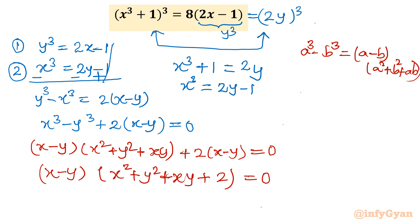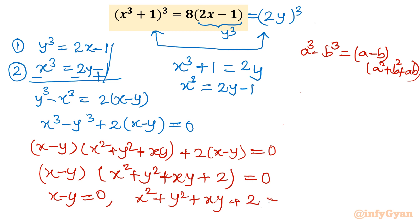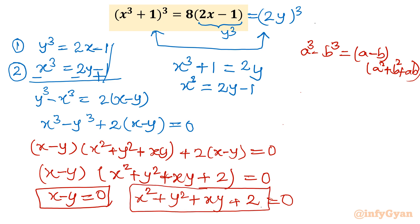Since this is a product of two factors equal to zero, either x − y = 0 or x² + y² + xy + 2 = 0. We will solve each case one by one. Let us start with the first: x − y = 0, meaning x = y.